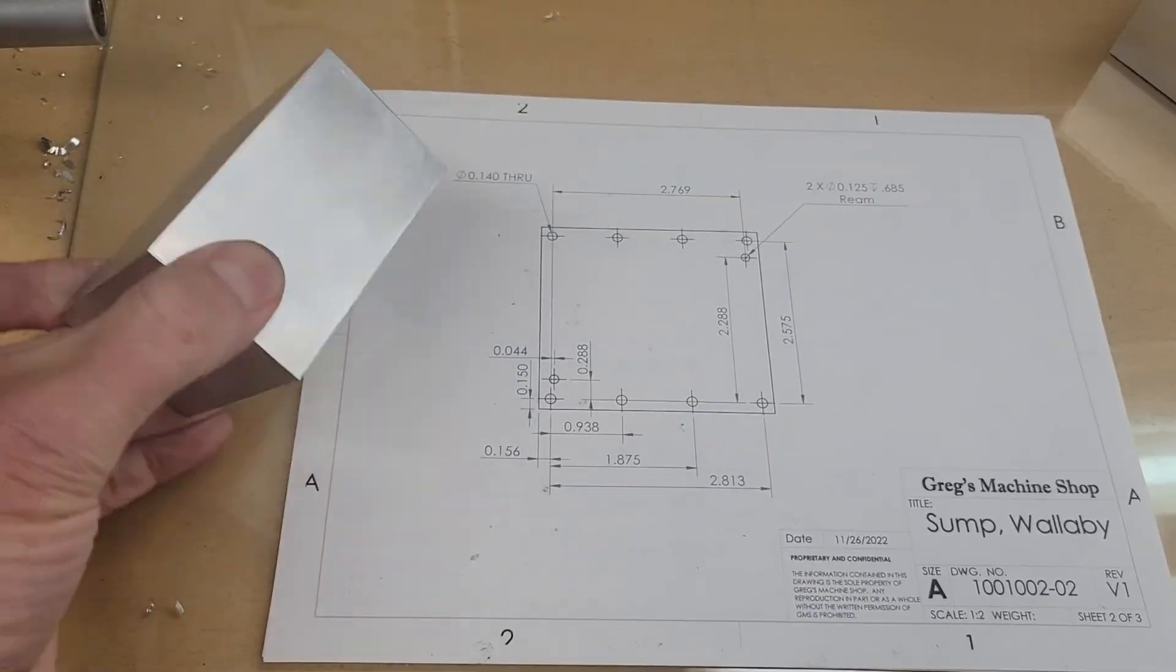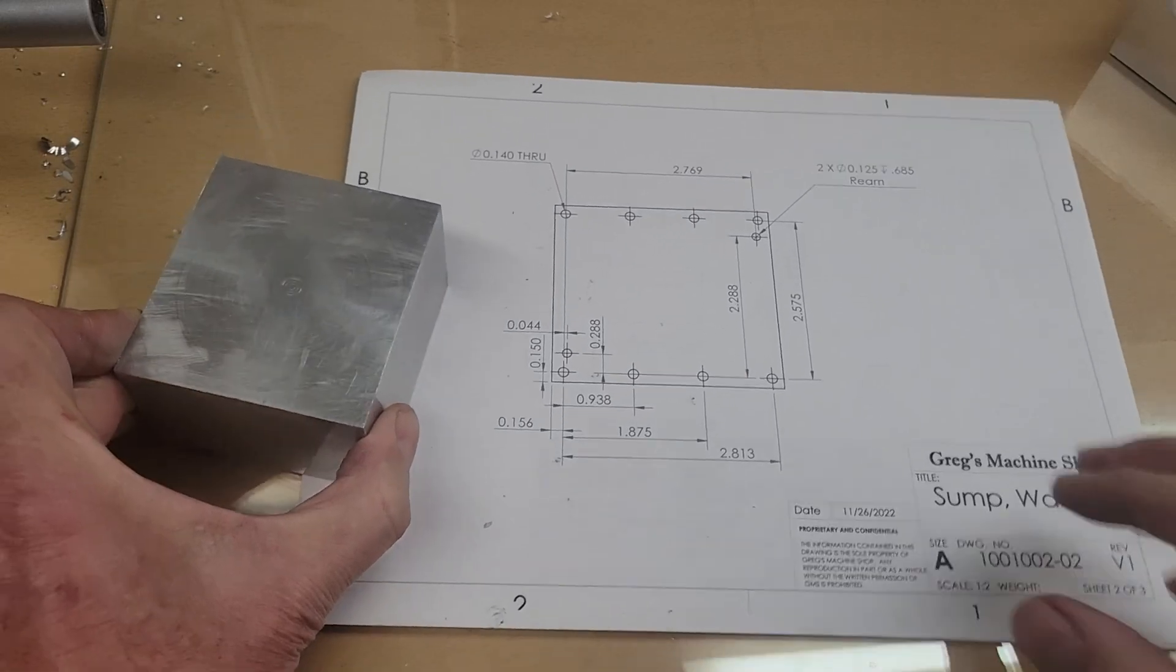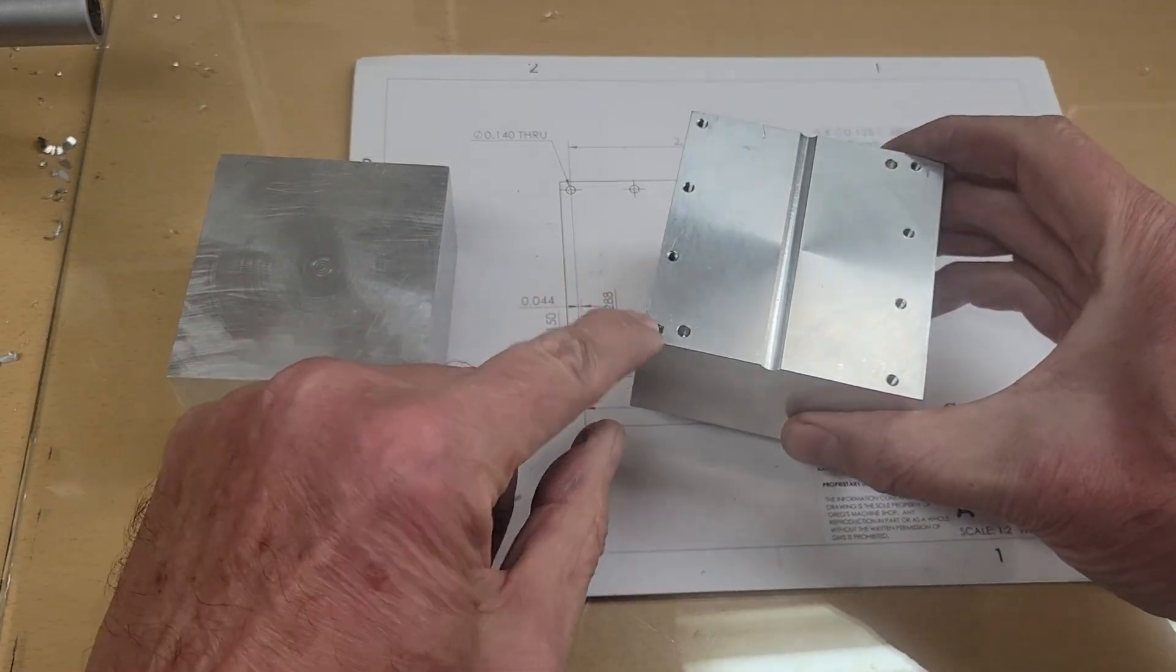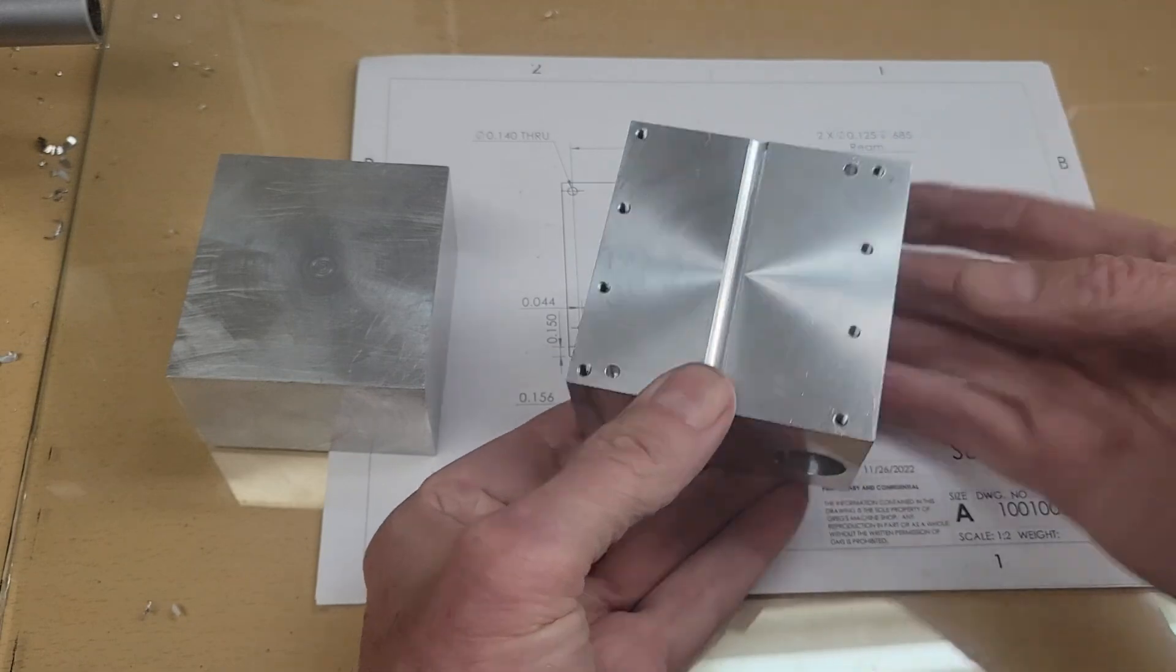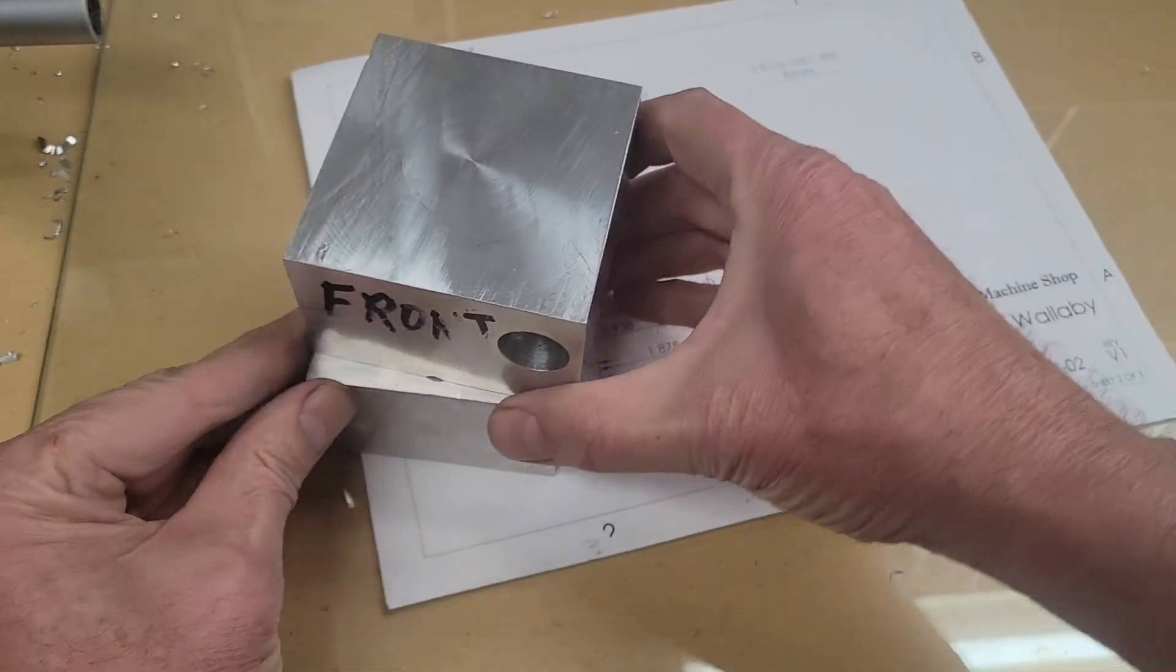So now we've squared up the block for our sump. Drill the same holes to match these on the crankcase. This will sit right up like this.